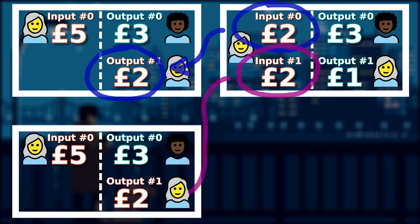And it looks like Alice is a frequent visitor of this convenience store, and the two £2 coins from this transaction were changes left over for the same item from the previous transactions.